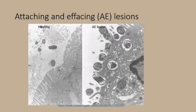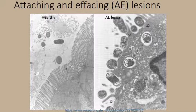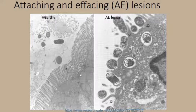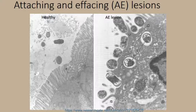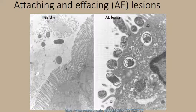This is about the attaching-effacing capacity of these lesions. In many cases, you may not find much lesion in the intestine, because only ultrastructural changes occur. On the left, you can see a healthy intestine with the brush border of the intestinal epithelial villi very intact. On the right, almost all the villi are lost or damaged — this is the attaching and effacing lesion produced by E. coli.